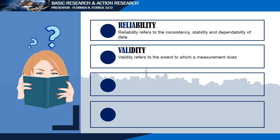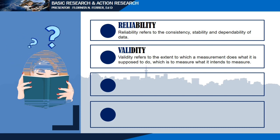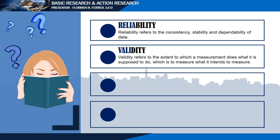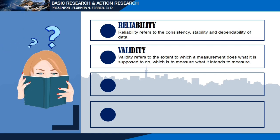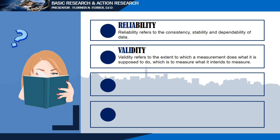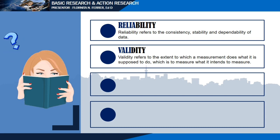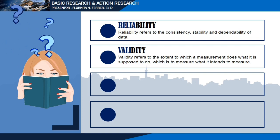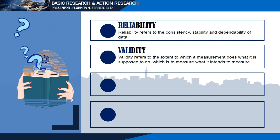How about research validity? This refers to the extent to which a measurement does what it is supposed to do — to measure what it intends to measure. Validity of research tells how well the results among study participants represent true findings among similar individuals outside the study. This concept applies to all types of clinical studies, including those about prevalence, associations, interventions, and diagnosis. This is more applicable with quantitative study. For example, a survey designed to explore depression but which actually measures anxiety would not be considered valid.